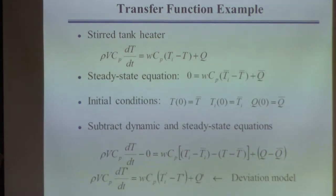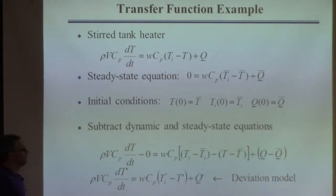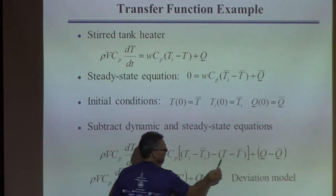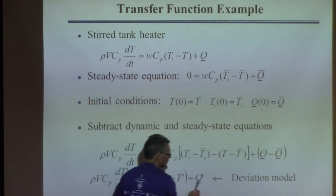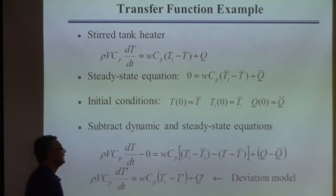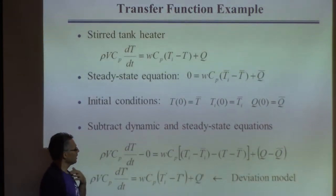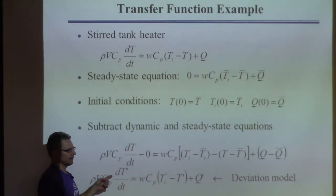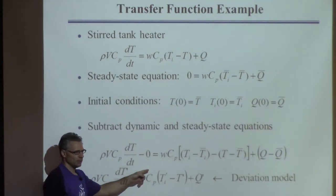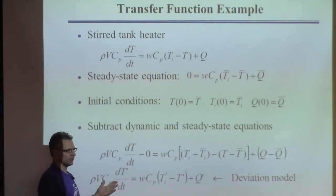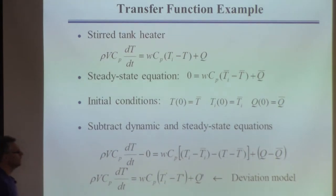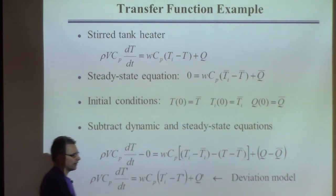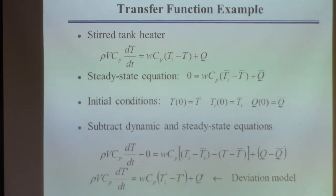This is why deviation variables are convenient. Right here that's what we call Ti-prime, this thing is T-prime, and this is Q-prime. Even though this is T and I say this is T-prime, they're equal because they only differ by a constant — T-prime is T minus T-bar, so the derivative of T and T-prime are the same thing. So this is my differential equation in terms of deviation variables.